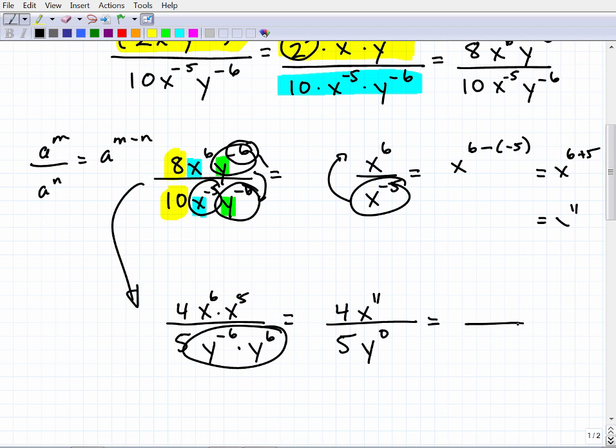So I purposely did this problem because I wanted to see if you knew what y to the zero or x to the zero or anything to the zero power is. And hopefully you didn't say zero. A lot of students will answer that. Anything to the zero power is one. So we have four x to the eleventh. Y to the zero power is one. So that's just one times five. So this would be our final answer here.